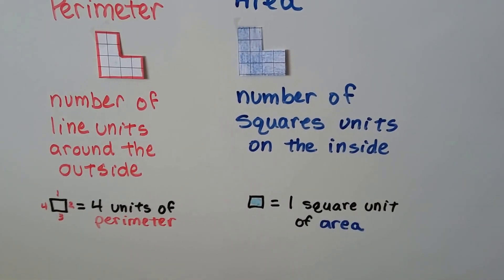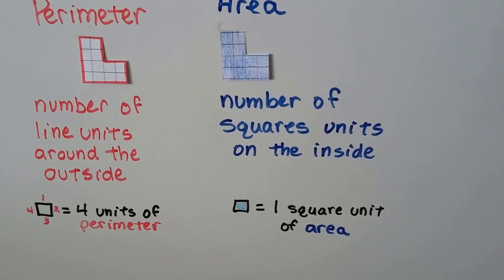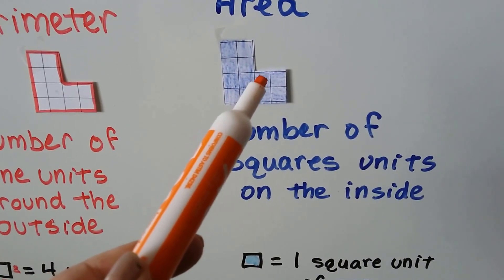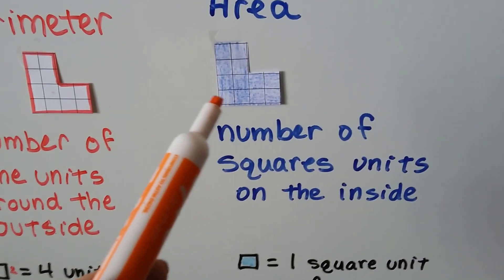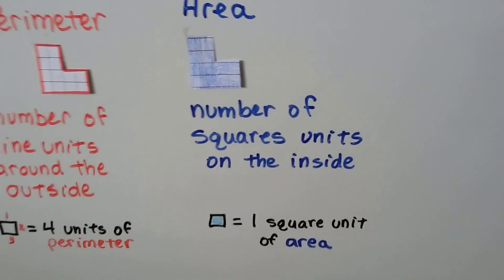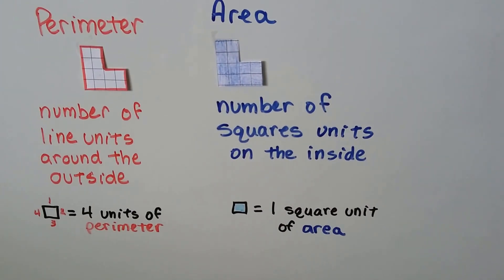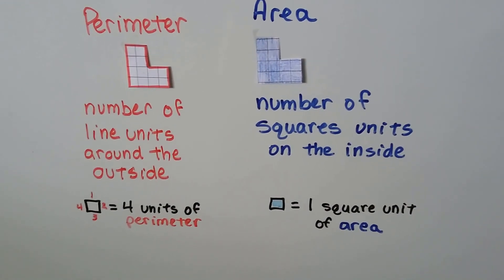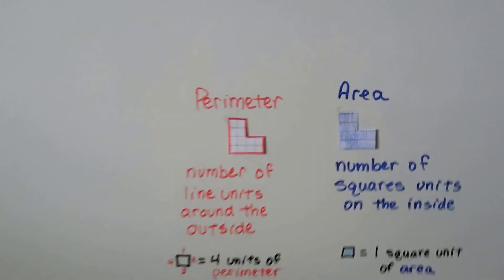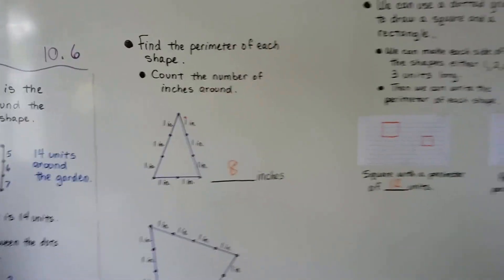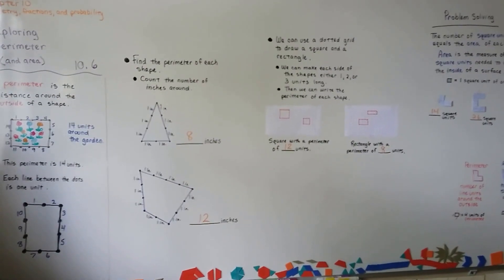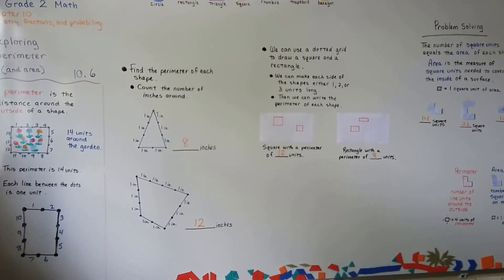That's four units of perimeter. We would have 1, 2, 3, 4, 5, 6, 7, 8, 9, 10, 11, 12 square units of area. The area could be a different number than the perimeter because there are two different measures — sometimes they could be the same. So that is perimeter: it's like a fence going around the outside and how much fence you would need. And area is the amount on the inside.